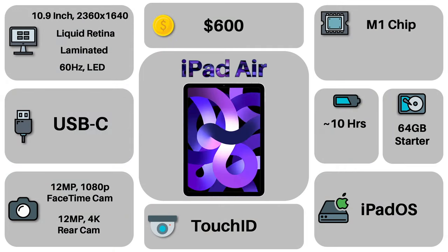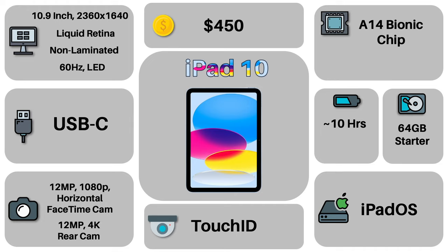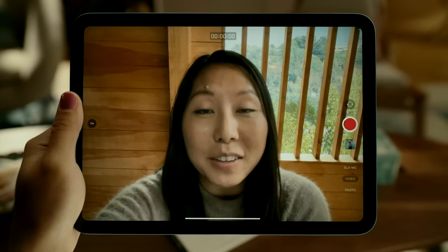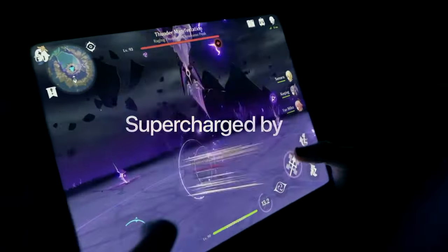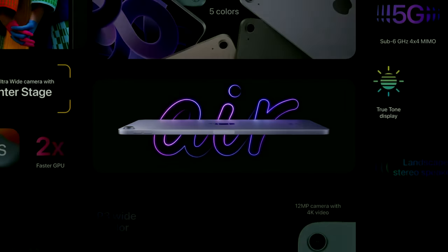Besides that, we get the same battery lives, USB-C charger, Touch ID fingerprint scanner, and even cameras — with the iPad 10 having a more modern landscape camera along the side of the tablet, so your face is centered during calls. Many of these features are simple quality of life differences with one main differentiating factor, but bringing them all together, you can see which device suits which type of person.